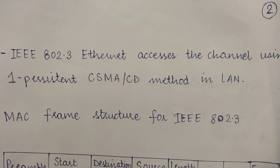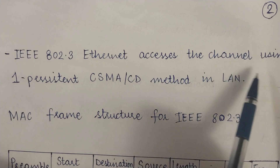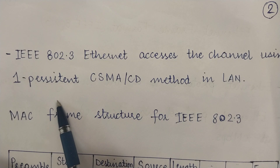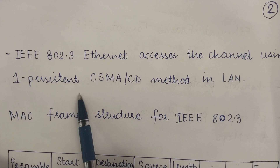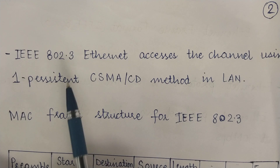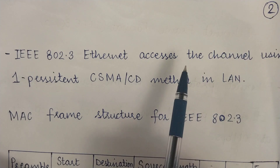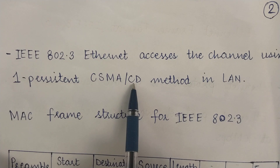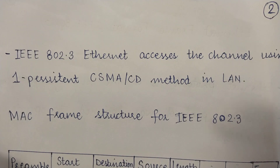IEEE 802.3, or Ethernet frame format, accesses the channel using the one-persistent CSMA/CD method in LANs. So it uses one-persistent CSMA along with collision detection, incorporated for use in local area networks.